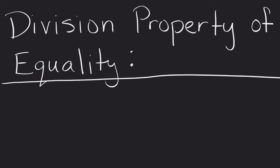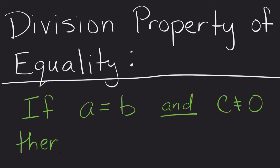Division property of equality. This says that if A equals B and our C value is not equal to 0, then I can take A equals B. I can divide both sides by C and it will remain a true statement.